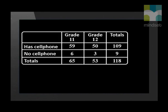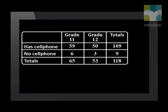What is the probability that a learner in grade 12 has a cell phone? The intersection between having a cell phone and being a grade 12 learner is 50. To get the probability, it will be 50 divided by the big total, which is 118. This gives us an answer of 0.42. If we want to calculate the probability that a grade 11 or 12 learner does not have a cell phone, we would use the total number of learners who do not have cell phones. The total is 9, and 9 divided by the total gives us an answer of 0.08.